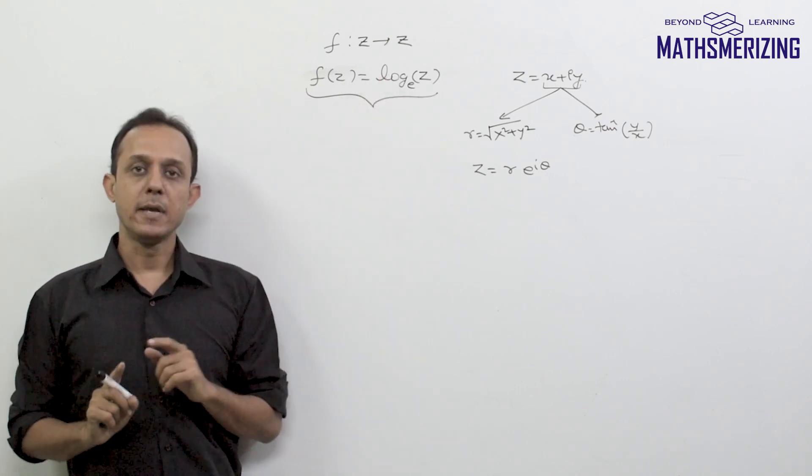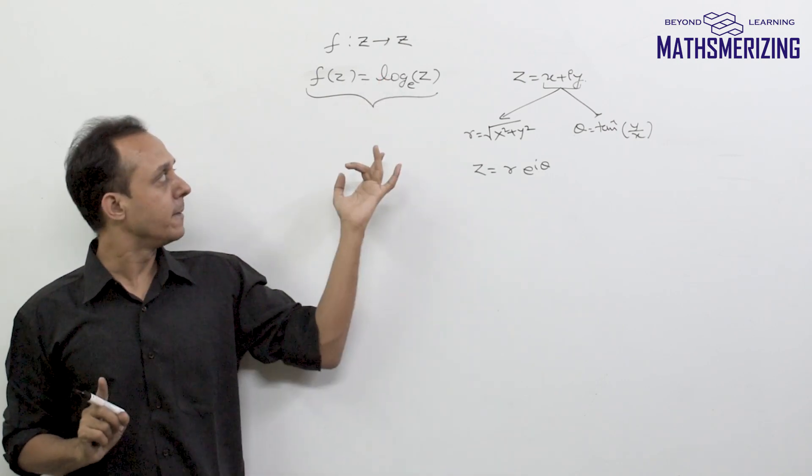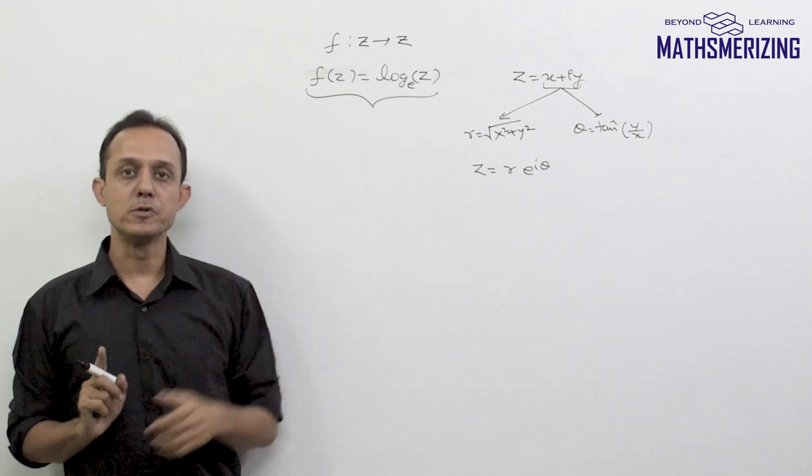But in complex number, this logarithmic function, it's a multi-valued function. So for one value of z, we'll have many values of f(z).